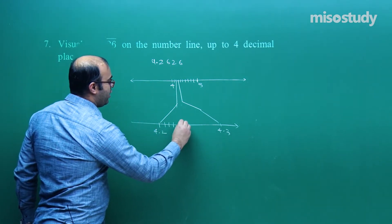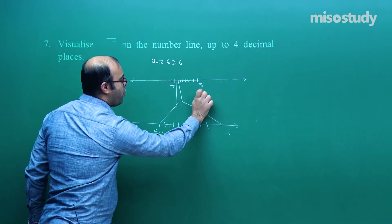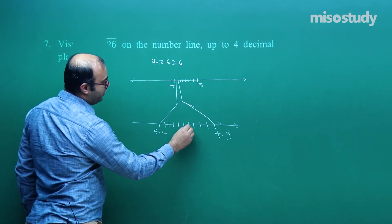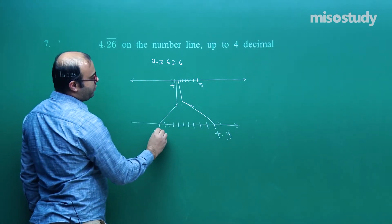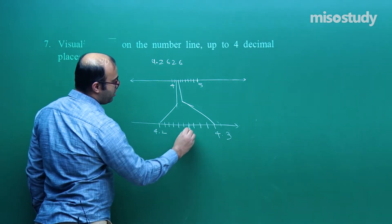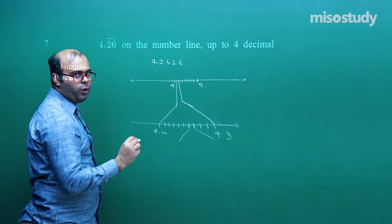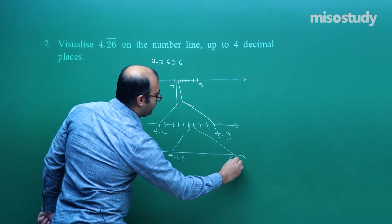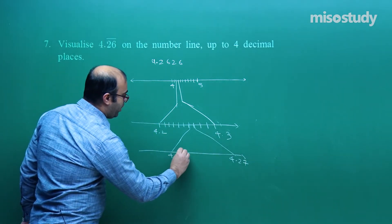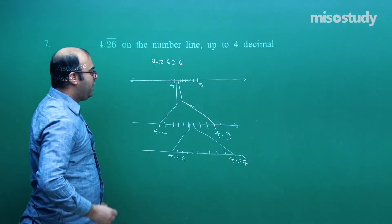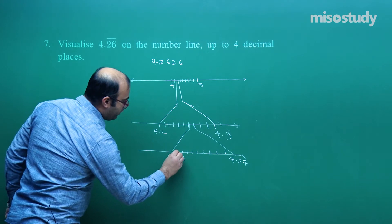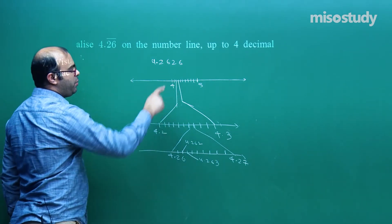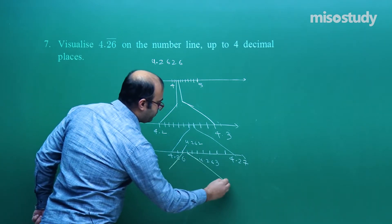We again divide the segment between 4.2 and 4.3 into 10 equal parts. The 6th mark is 4.26 and the 7th is 4.27. We enlarge the segment between 4.26 and 4.27 and divide it into 10 equal parts. The 2nd mark is 4.262 and the 3rd is 4.263. We magnify between 4.262 and 4.263 again.